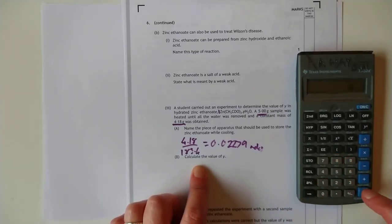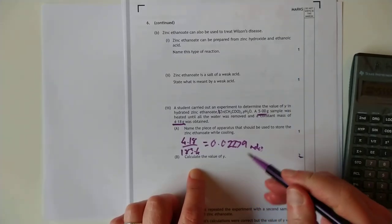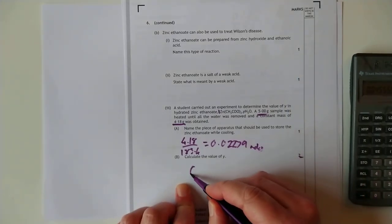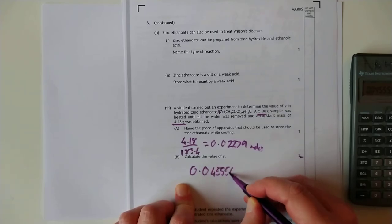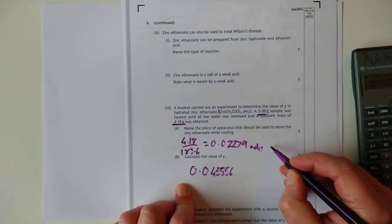0.82 over 18, because that's the GFM water, gives us, so that's 0.0455, all the 5, 6.